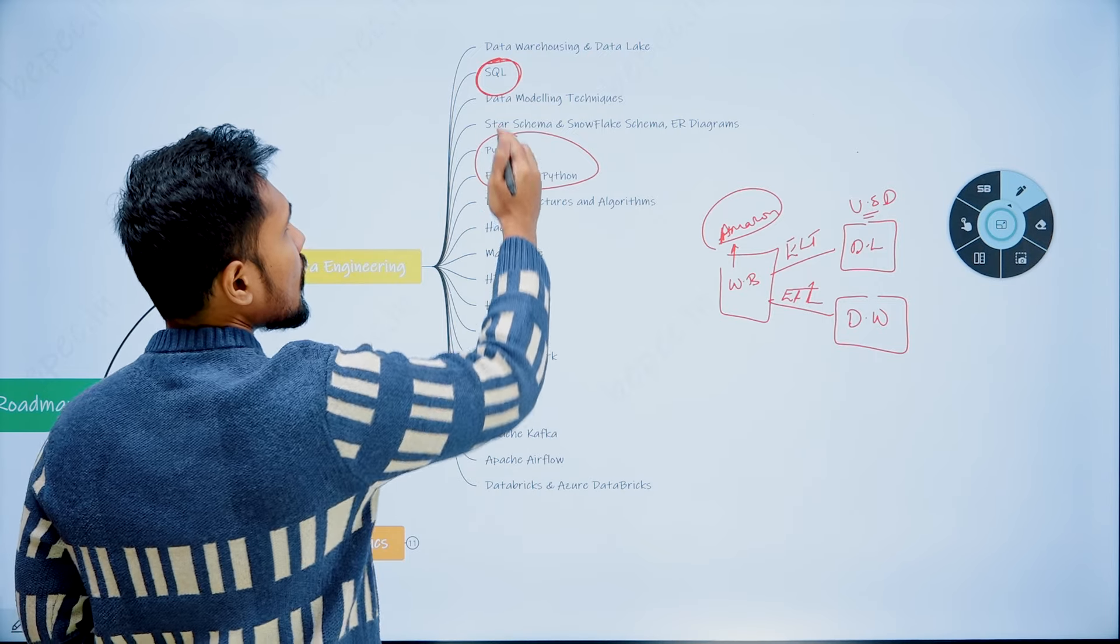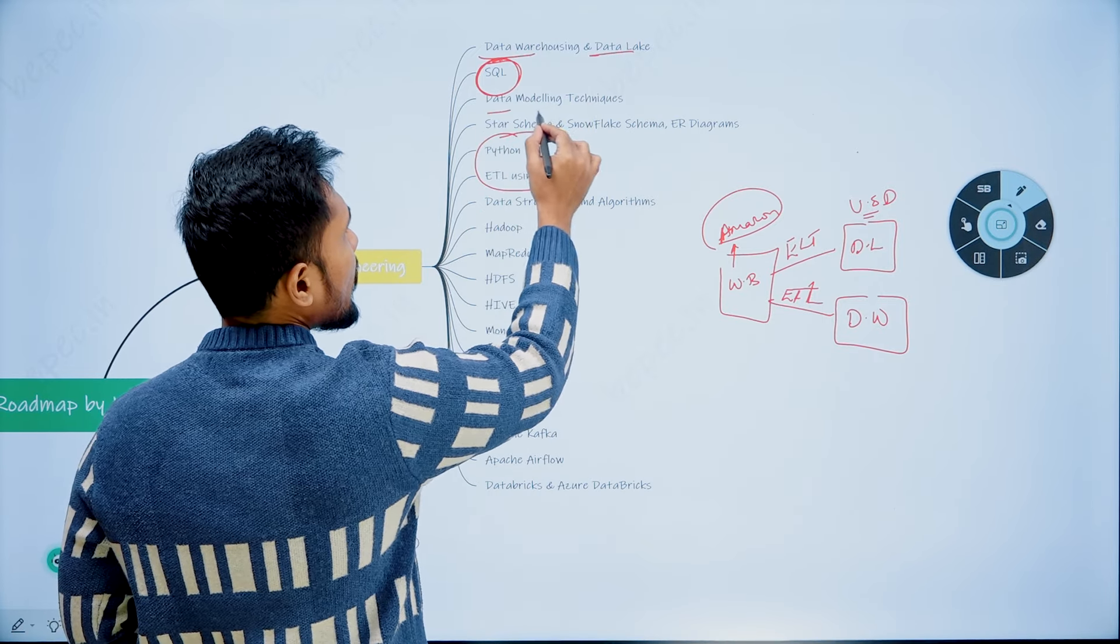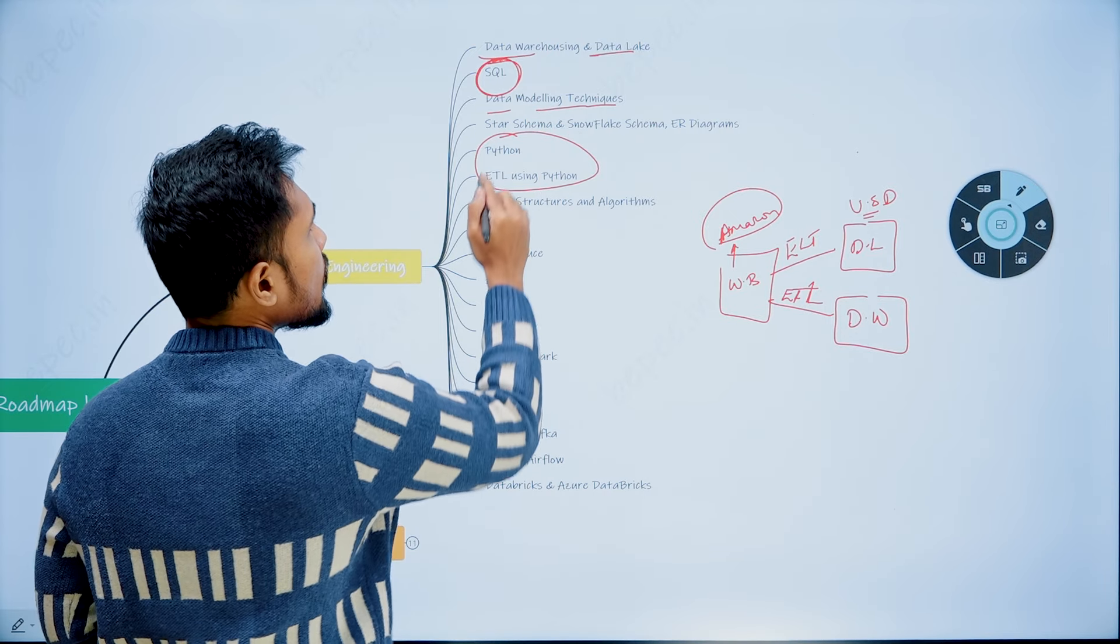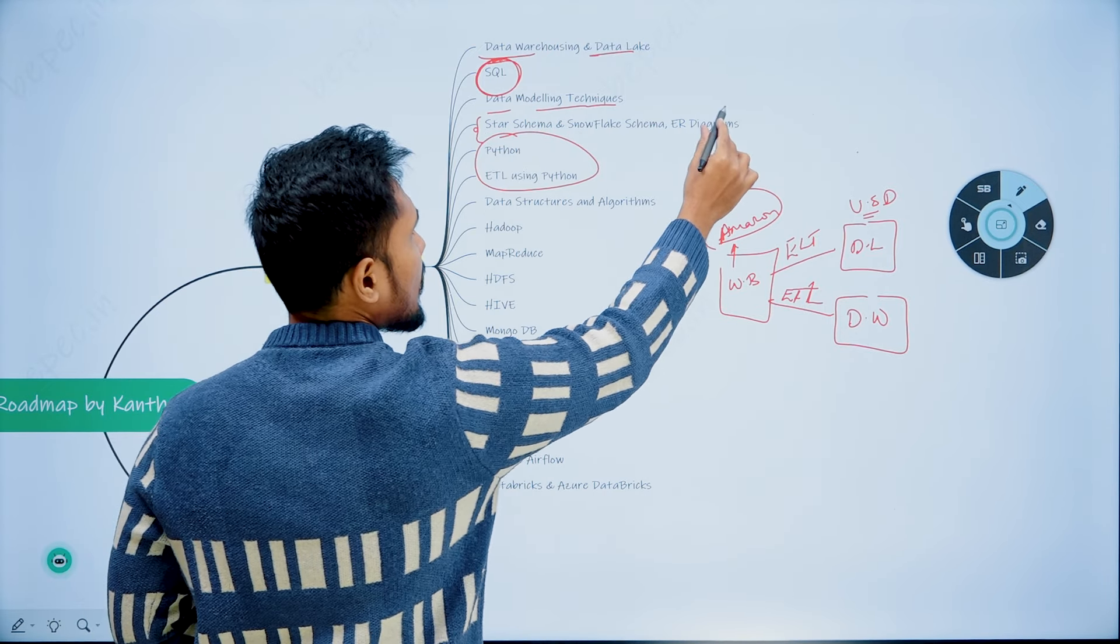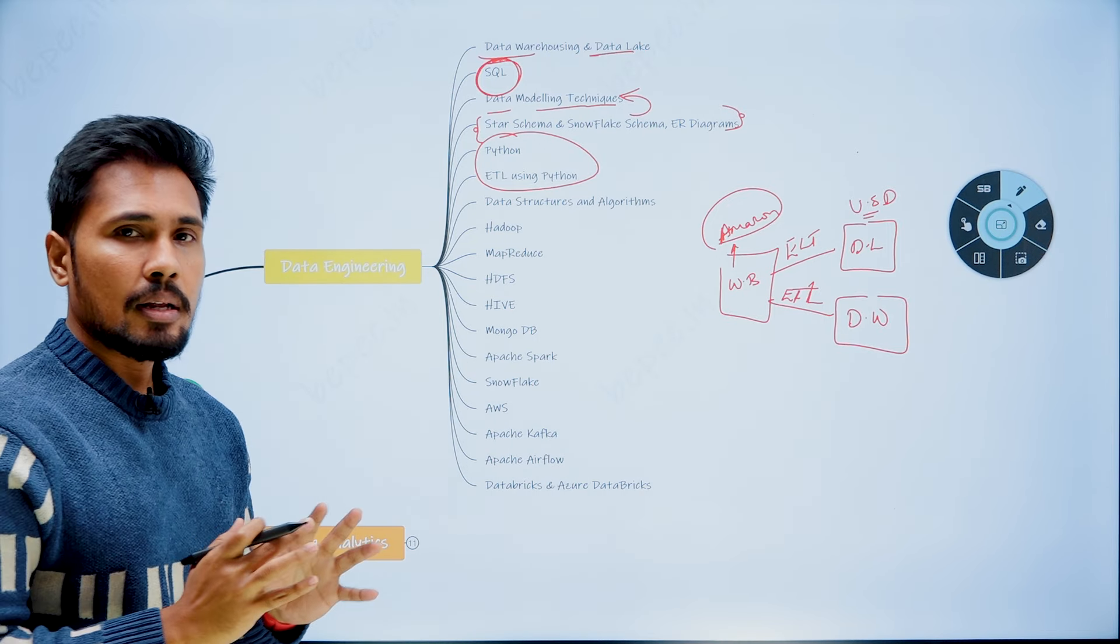In SQL, you need to learn about data warehousing concepts, data lake concepts. You need to learn about various data modeling techniques. You need to learn about star schema and snowflake schema ER diagrams. All this falls under the category of data modeling. You need to master it.